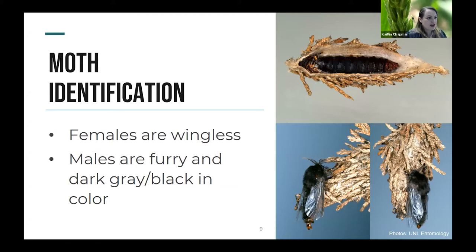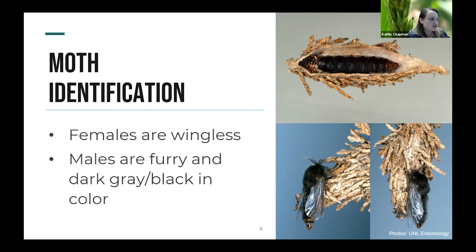In order to see a female, you'll have to dissect open the bag. Whereas the males are furry and stark gray or black in color, and seeing them is actually pretty rare too. Since the males do leave the bag, sometimes you'll see an empty pupal case hanging out the end of a bagworm bag, which signifies that a male has left. So they look really different from each other.